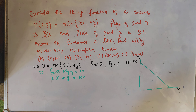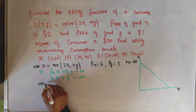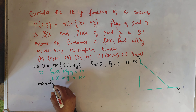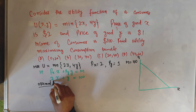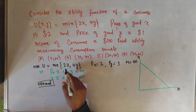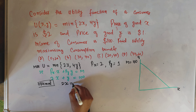We want to maximize this utility function subject to the budget constraint. The budget constraint is simply the price of good x times x plus price of good y times units of good y equal to income. Price of good x is 2, so we write 2x plus price of y is 1, so we write just y, equal to 100.